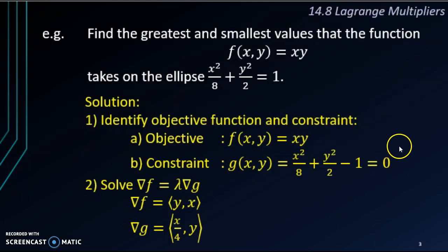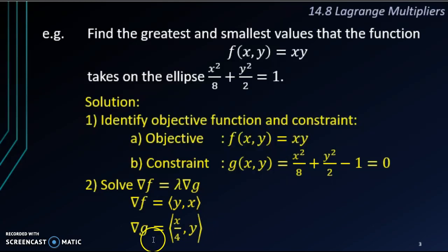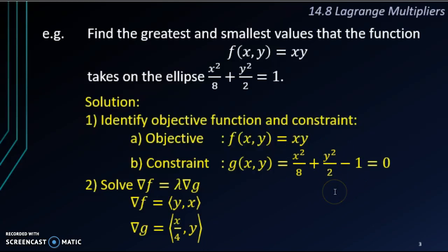After identifying the objective and the constraint, we solve the gradient of f equals to lambda times the gradient of g. Since this is a function of two variables, the gradient of f has two components: the i component is del f over del x, which gives y, and the j component is del f over del y, which gives x. For the gradient of g, differentiating with respect to x gives 2x over 8, simplified to x over 4, and differentiating with respect to y gives 2y over 2, which is y.